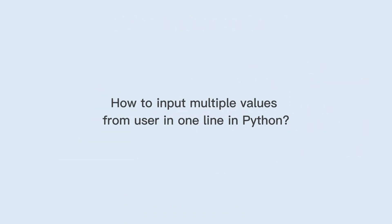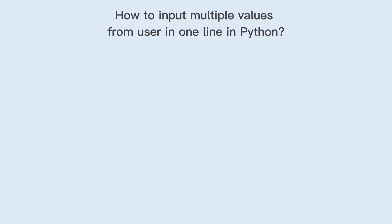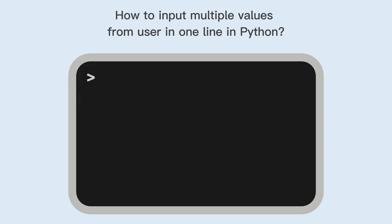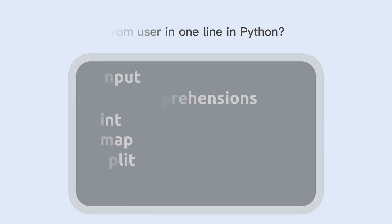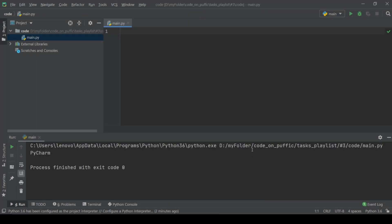How to input multiple values from a user in one line in Python. We will use the function input, list comprehensions, and map and split. Let's see the solutions.